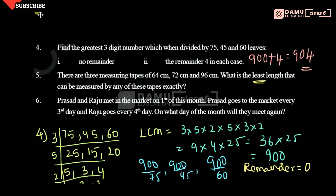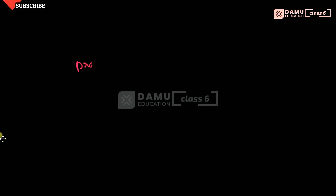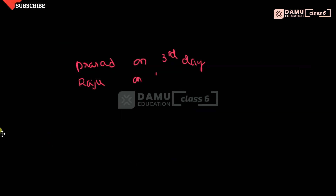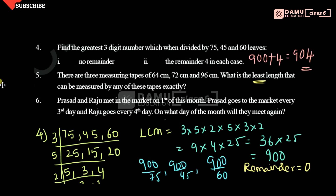Next question: Prasad and Raju met in the market on the 1st of this month. Prasad goes to the market every 3rd day and Raju goes to the market every 4th day. On what day of the month will they meet again? To find this, we need the LCM of 3 and 4.